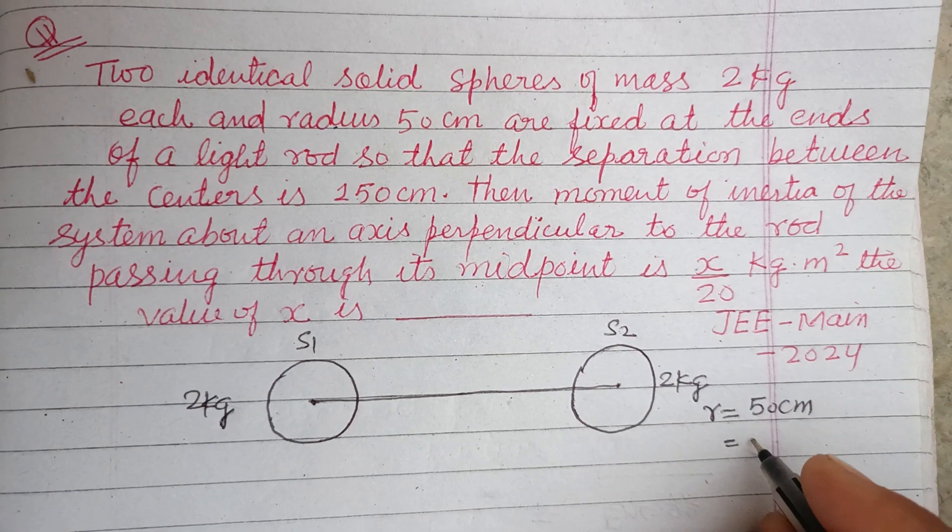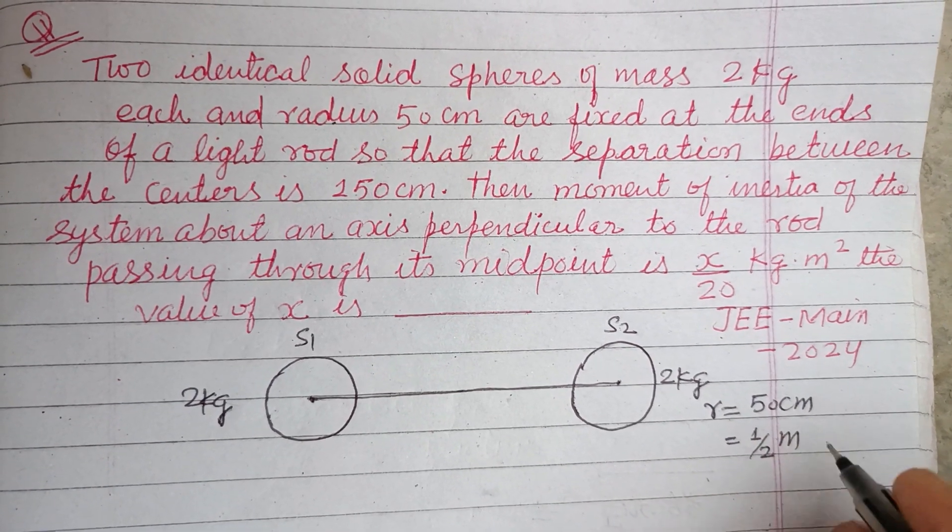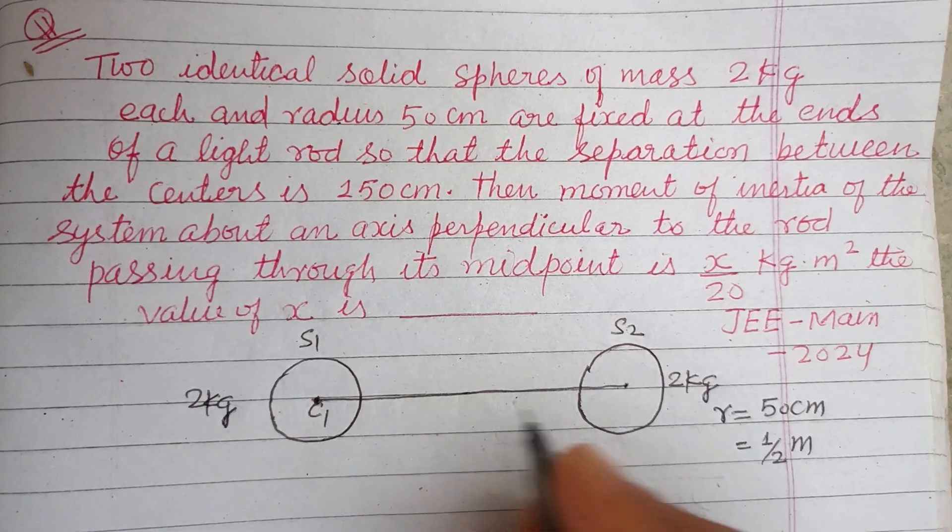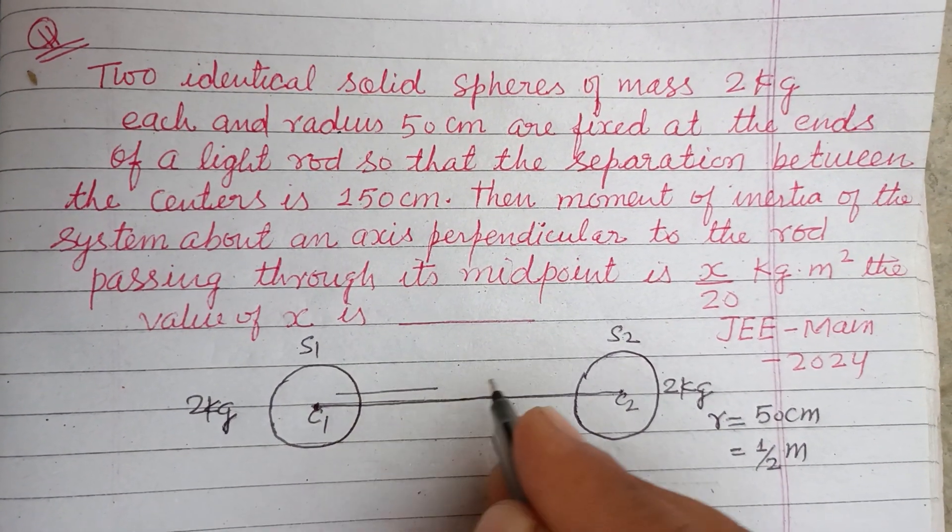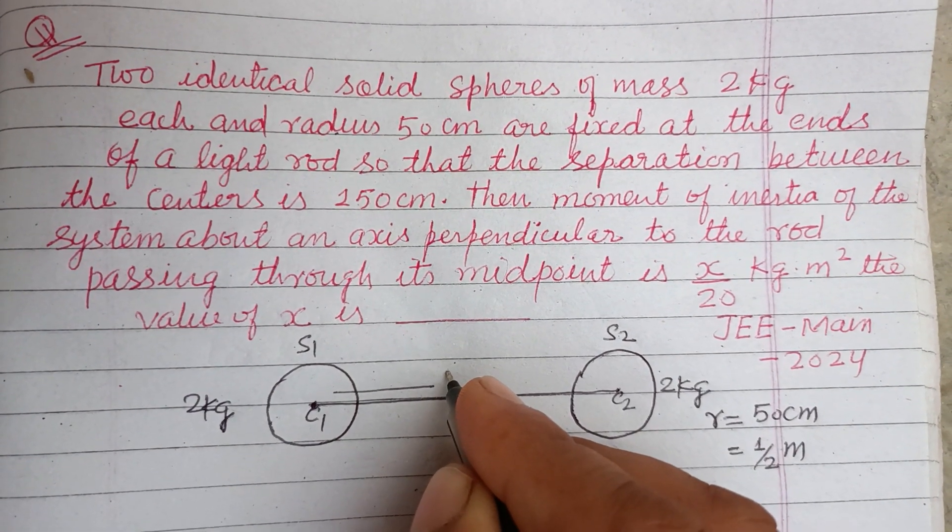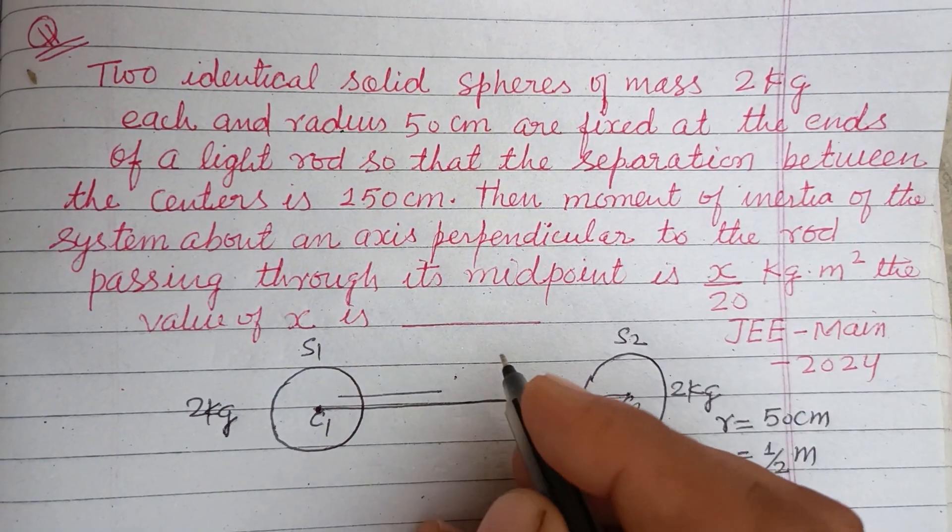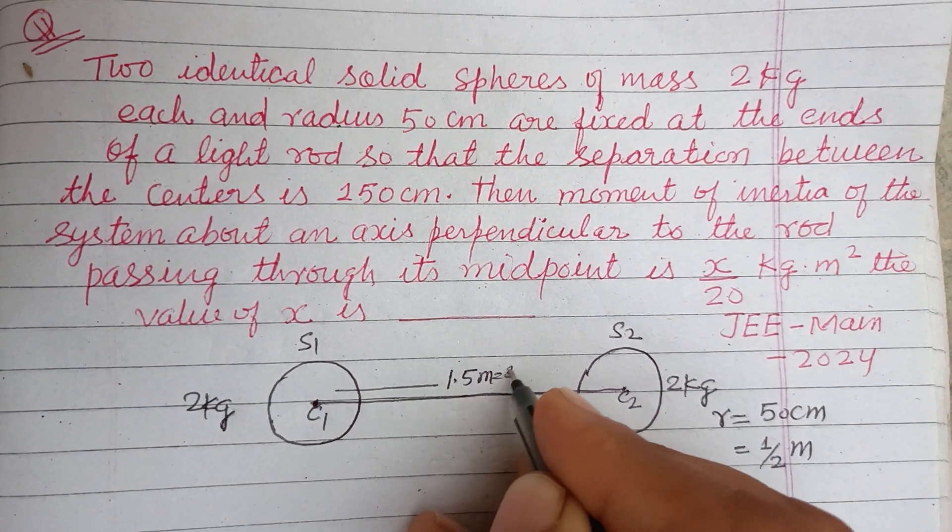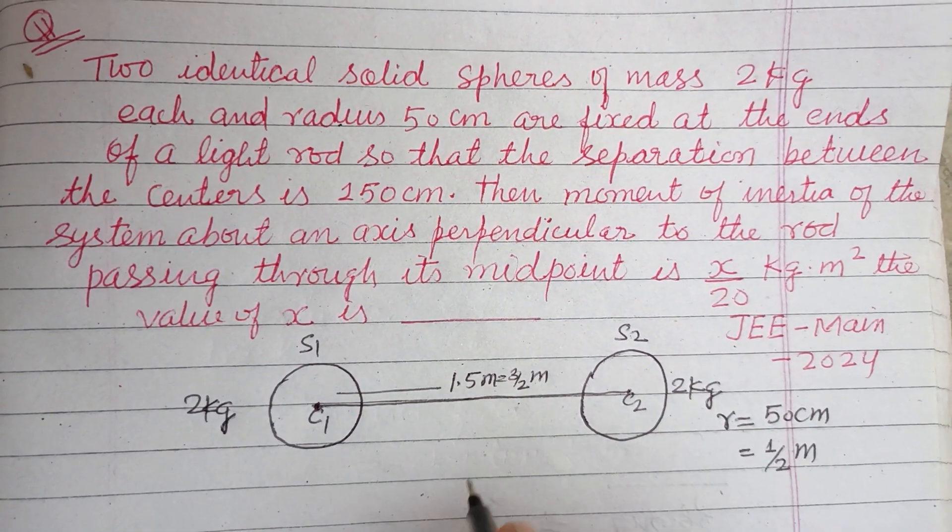The radius of the sphere is given to us as 50 centimeters, which is 1/2 meter. The distance between them - this is the center C1, this is the center C2 - is given to us as 150 centimeters, which equals 1.5 meters or 3/2 meters.